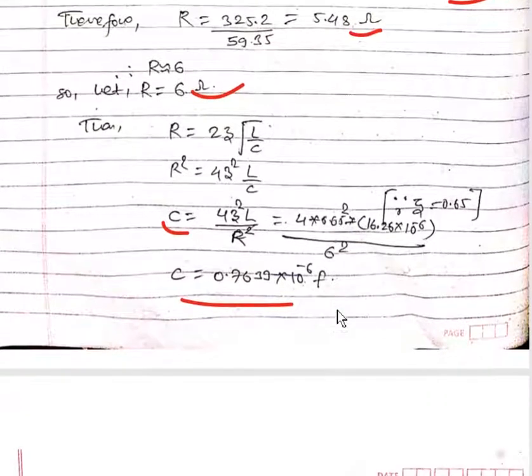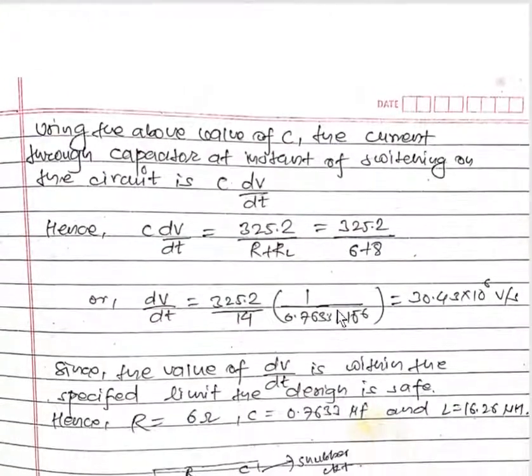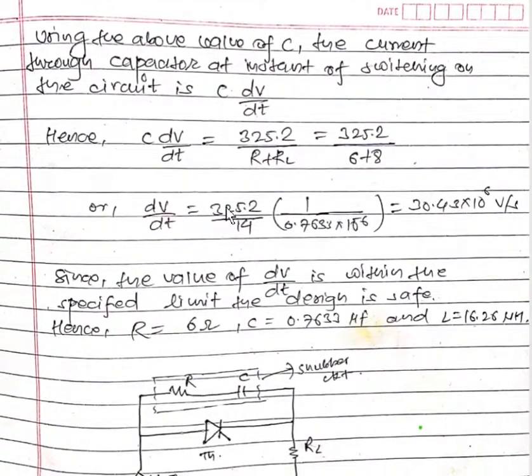Using the above value of C, the current through capacitor at instant of switching on the circuit is C dV/dt. To calculate, we have C dV/dt equals V upon (R plus RL). In place of V we have 325.2, and R plus RL is 6 plus 8.